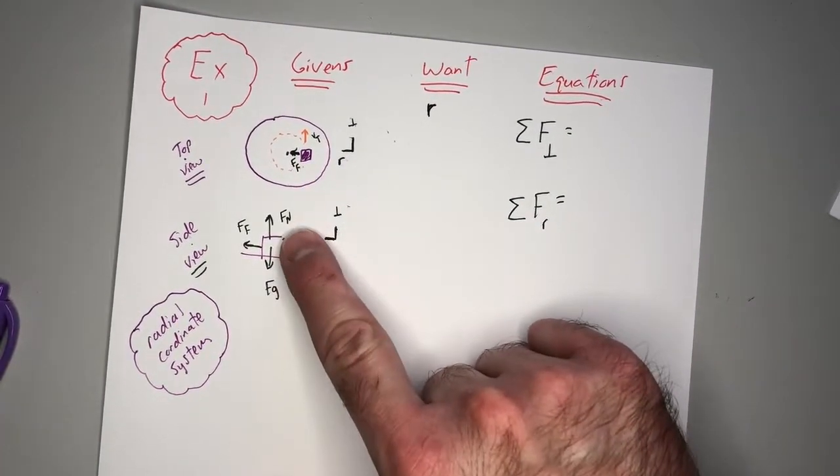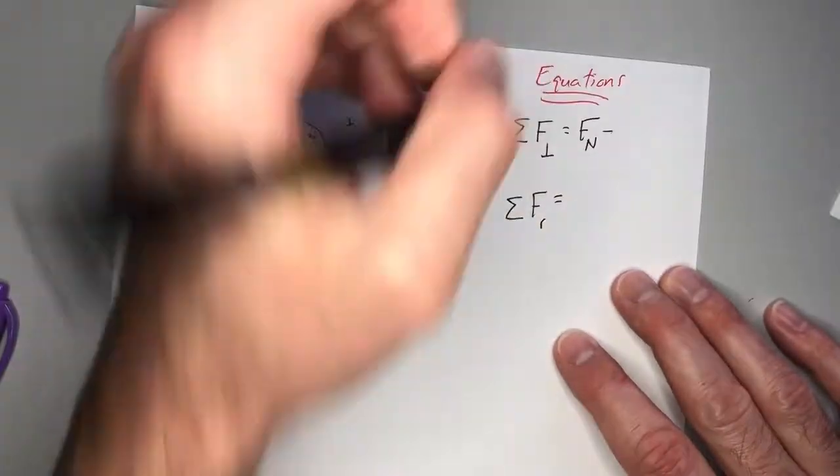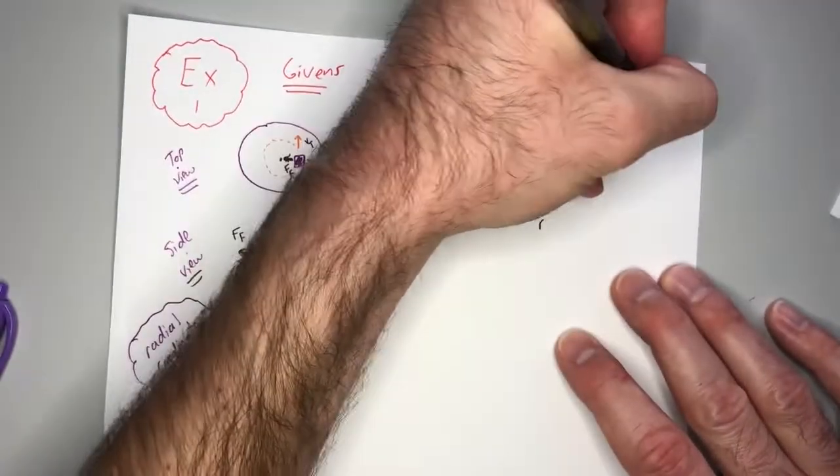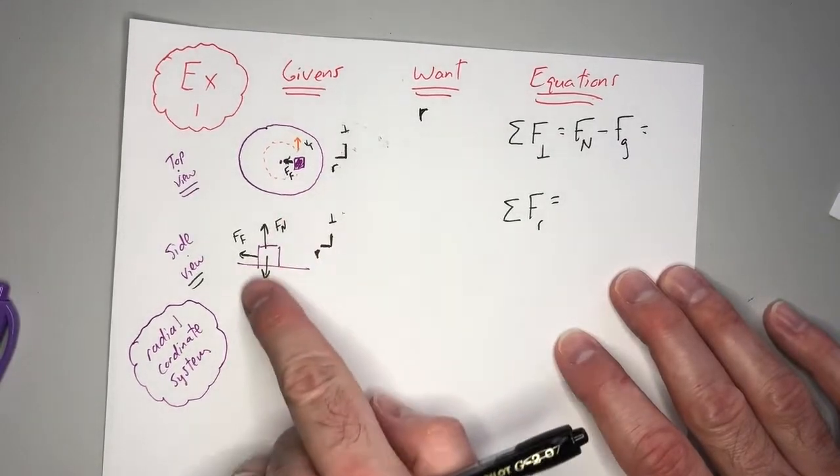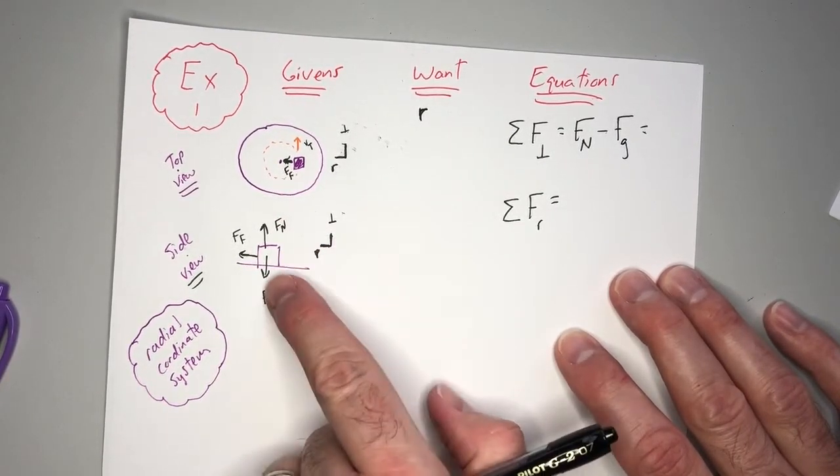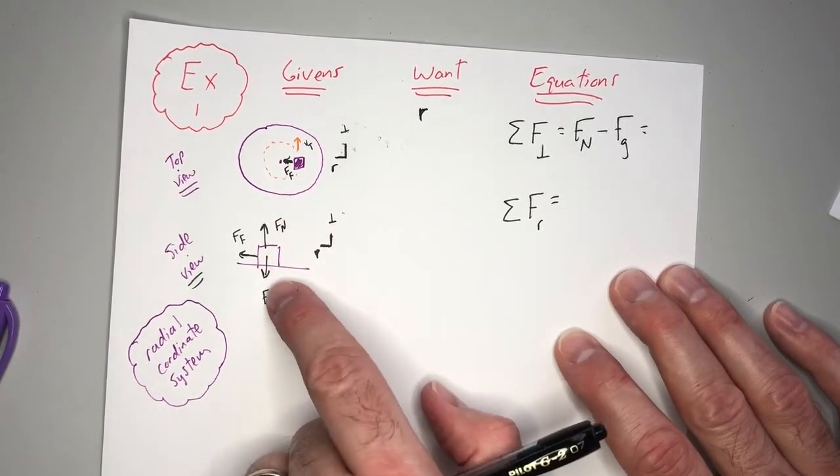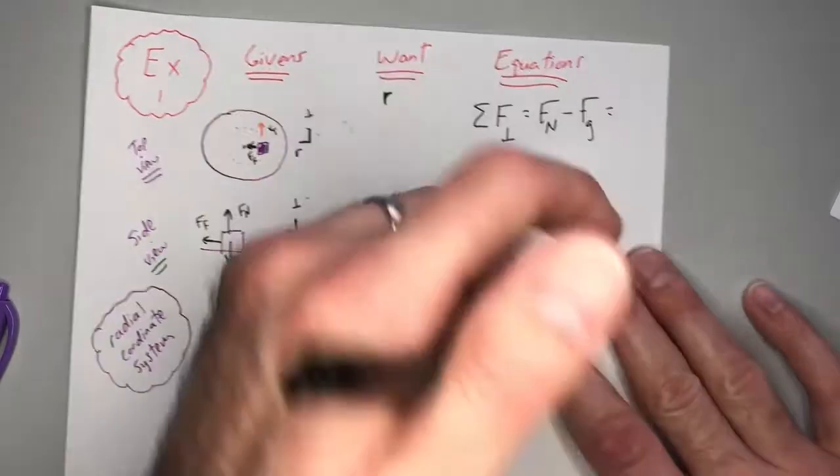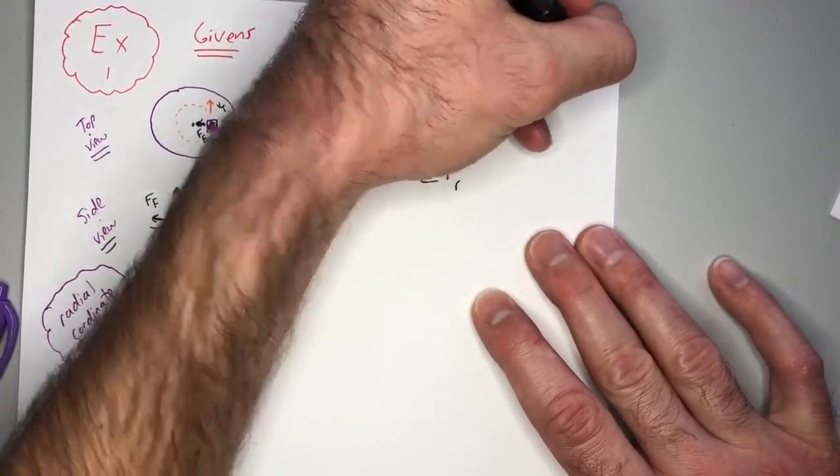So in the perpendicular direction, we have the normal force going up, fn, minus the gravitational force going down. And we ask ourselves, is there any net movement in the up and down perpendicular direction right here? Is the Dodge Caravan flying up or down? You're like, no, it's not moving up or down, so your net force in the perpendicular direction is zero newtons.